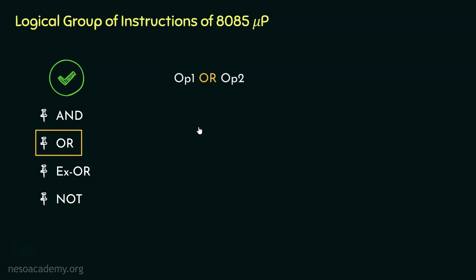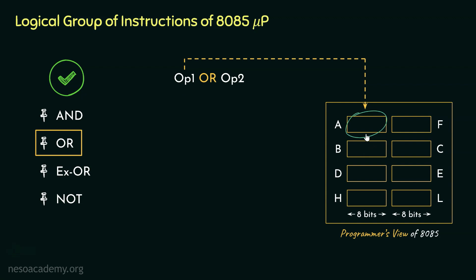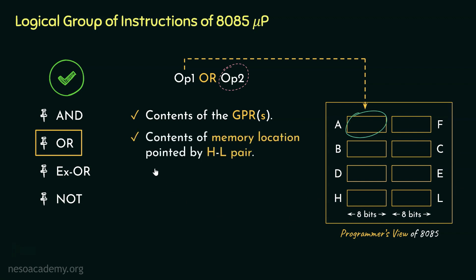Now just like AND, OR is also a binary operation — that is, we have got two operands involved in this operation. For the first operand, it will reside inside the accumulator register. Coming to the second operand, we can send it to the microprocessor via three different ways: it can be the contents within the GPRs (general purpose registers), the content of the memory location pointed by the HL register pair, or we can send the operand via 8-bit immediate data through the instruction itself.